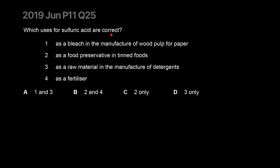Uses for sulfuric acid - which of these are correct? As bleach in the manufacturing of wood pulp? We're talking about sulfuric acid, it's not used as bleach. It's actually sulfur dioxide - they want to confuse you because people might remember there's something about bleaching wood pulp to make paper. Sulfur dioxide is also used as a preservative. Sulfuric acid is used in detergents - that's true - and not as a fertilizer.